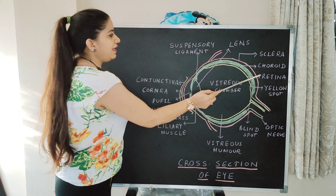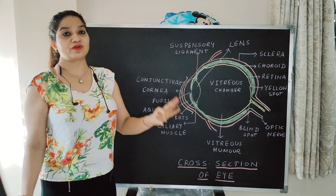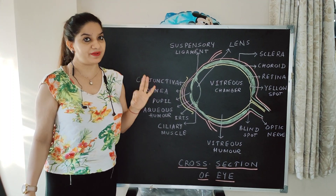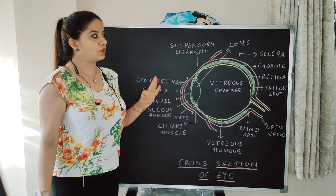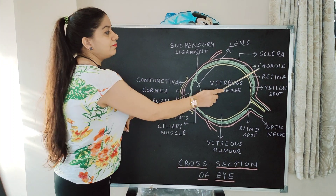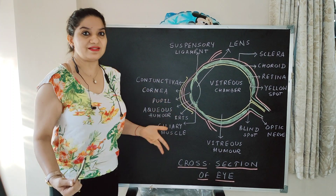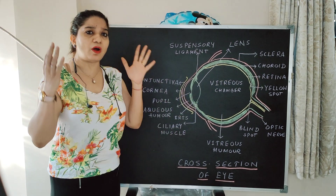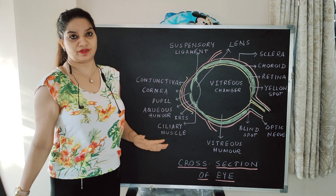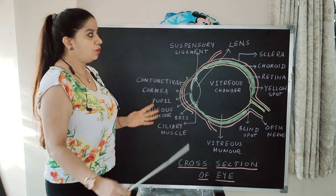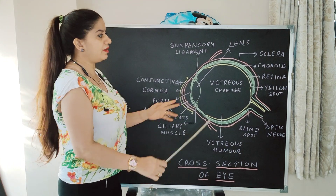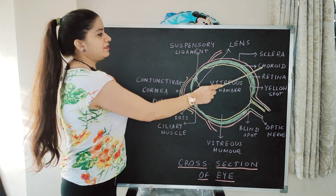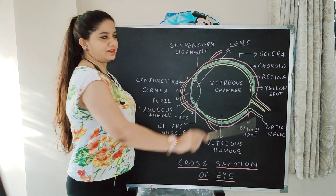The middle layer is choroid. It is richly supplied with blood capillaries, so it has blood vessels. This is an important layer and a most commonly asked question in exams: name the layer which is richly supplied with blood vessels — that is choroid.